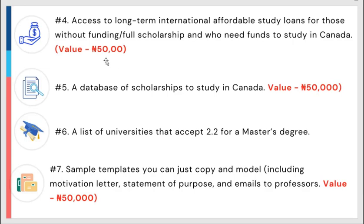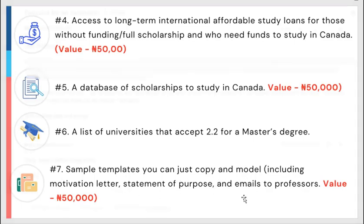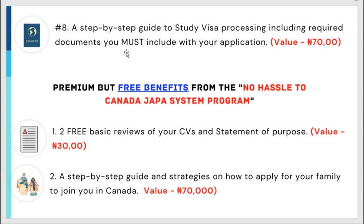Number five: you get a database of all current scholarships to study in Canada — valued at 50,000 Naira. Number six: you get a list of universities that accept a 2.2 degree for a master's program — even if you don't have a first class, there are schools listed for you. Number seven: you get sample templates including motivation letters, statements of purpose, and emails to professors for full funding — valued at 50,000 Naira. Number eight: you get a step-by-step guide to study visa processing, including all required documents — valued at 70,000 Naira.